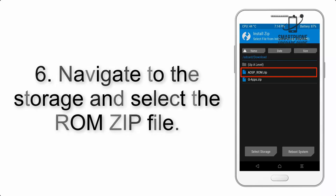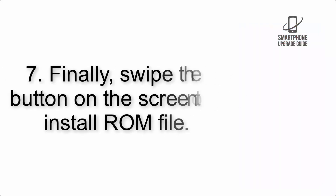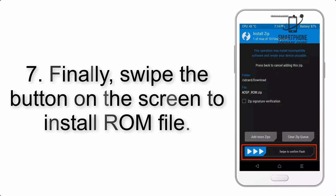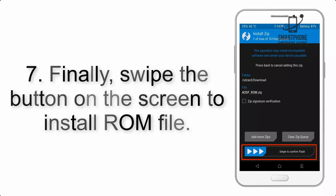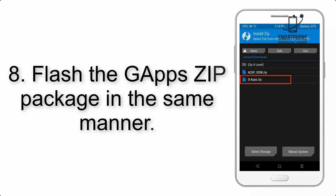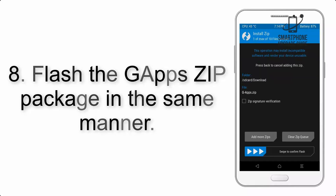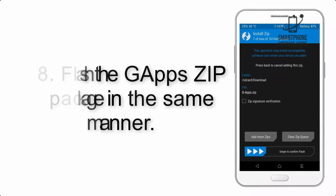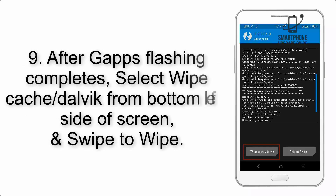Step 5: Go back to the recovery main screen and tap on the Install button. Step 6: Navigate to the storage and select the ROM zip file. Step 7: Finally, swipe the button on the screen to install the ROM file.